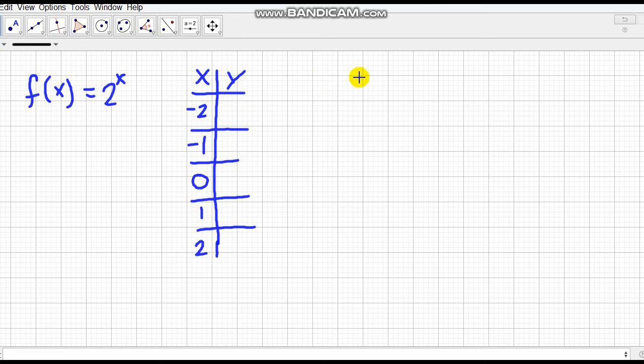So let's use these values and solve for the value of y. In solving for this, we will substitute x with the value. So this becomes f(-2). So we use -2 first, solve for the value of y if x is -2. So f(-2) = 2^(-2).